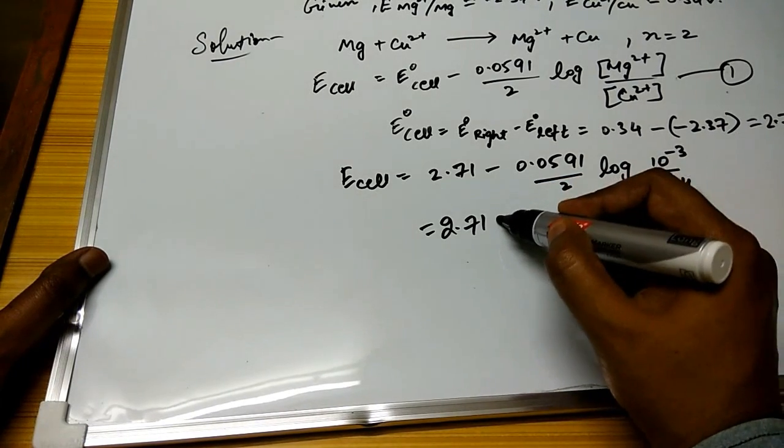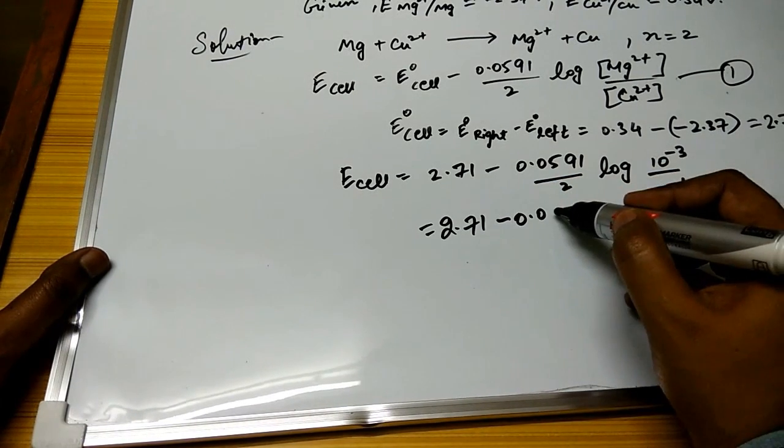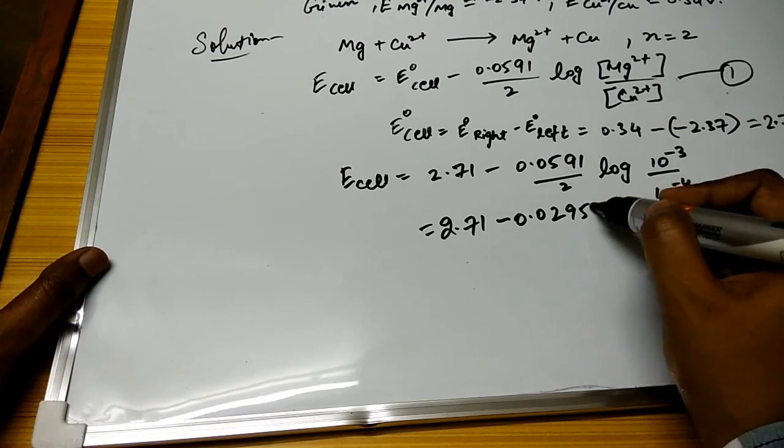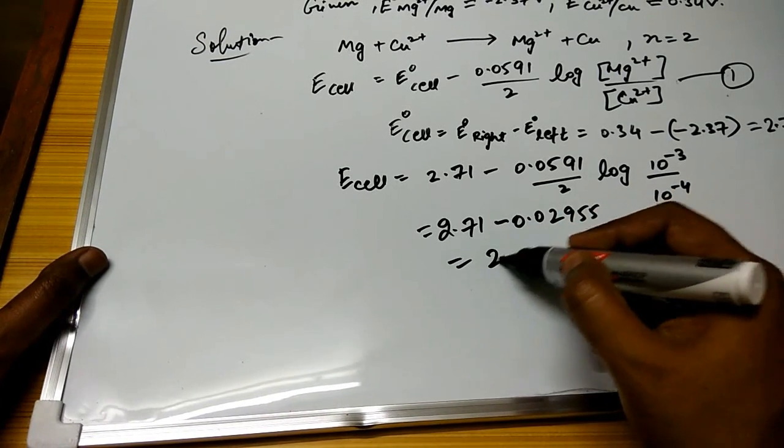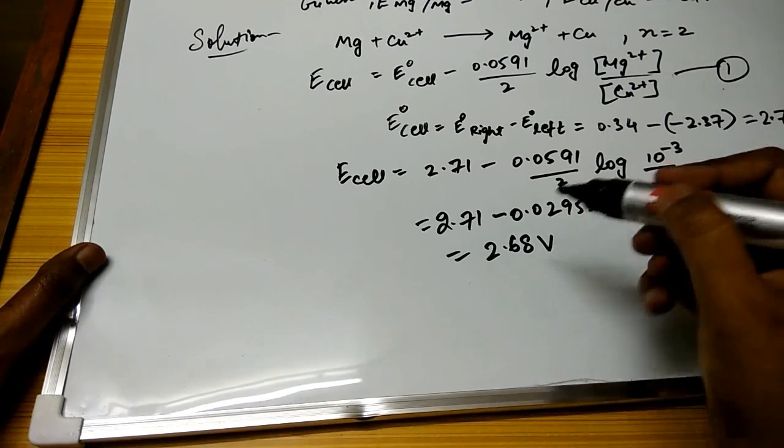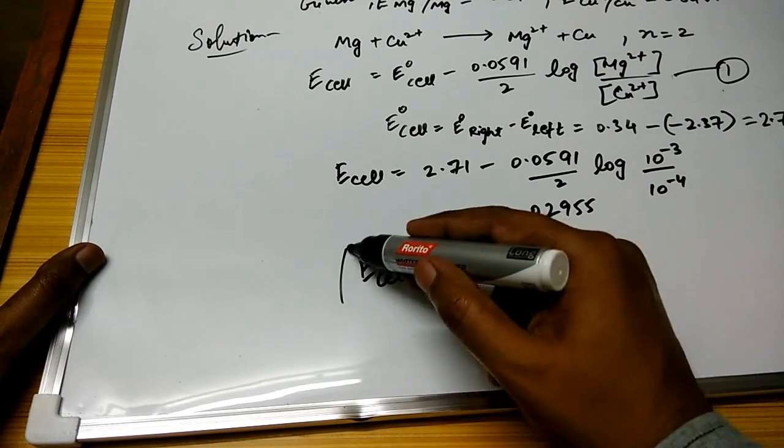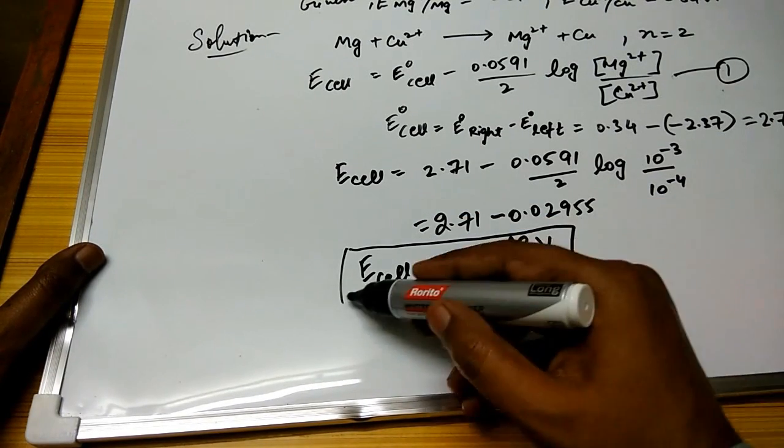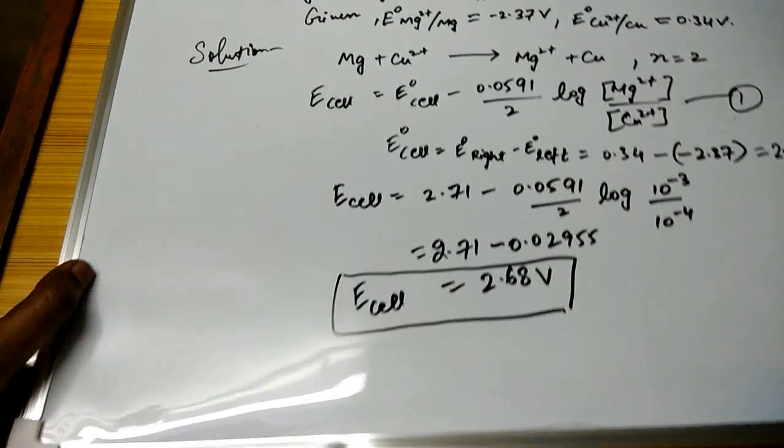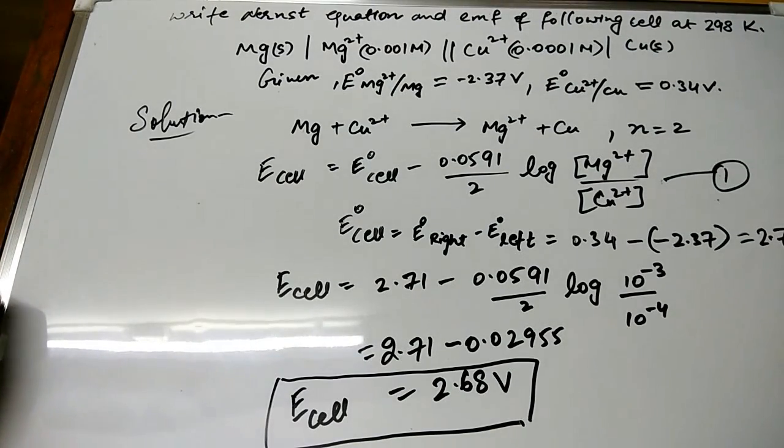Now solving this value further we can get 2.71 - 0.02955, which will come out to be 2.6768 volts. So this is the exact value of E_cell.